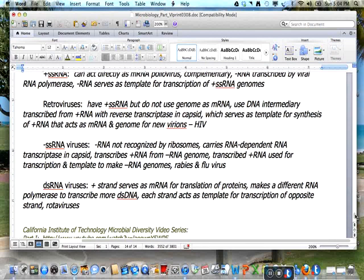It makes a different RNA polymerase to transcribe more double-stranded DNA. With each strand acting as a template for transcription of the opposite strand. This is done by rotoviruses.